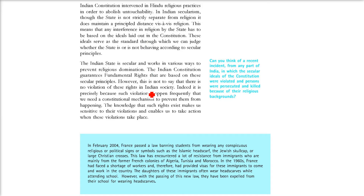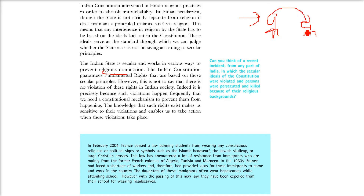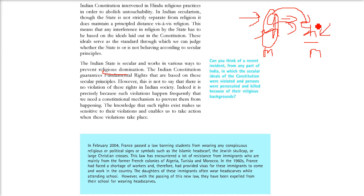So the Indian state is secular and works in different ways to prevent religious domination. The Indian constitution guarantees fundamental rights based on secular principles, but still there are certain violations. We must understand that if we are the majority — like if you are an elder brother and you have a younger brother — it is your responsibility to take care of the younger one. You cannot discriminate or marginalize minorities following a different faith just because you are in the majority. This is the responsibility of the majority to take care of the minority, and this is the crux of secularism.